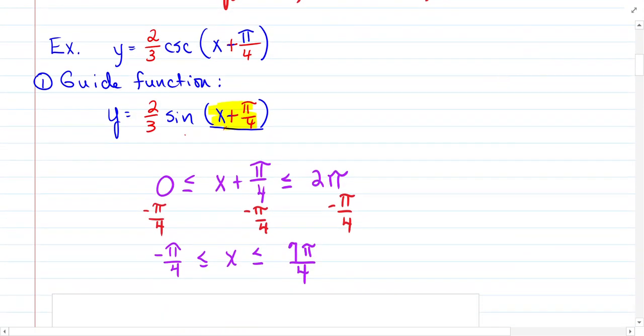So this is what you're asked to graph: y equals two-thirds cosecant of x plus pi over 4. So instead of worrying about graphing cosecant, we're going to graph two-thirds sine of x plus pi over 4. We know how to do that. We have a phase shift. So we take that argument and put it in between our period, which is 2 pi.